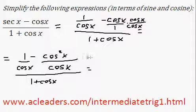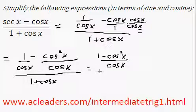Now I can combine the fractions, and it will become 1 minus cos squared x, all over cos x, 1 over 1 plus cos x.